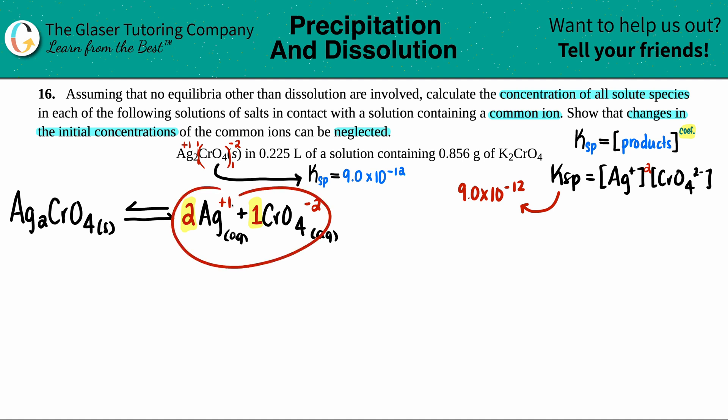This is a common ion question. I have this compound already in a solution that has K2CrO4. K2CrO4 has a group one ion, and remember our solubility rules: anytime you have a group one ion, those compounds are always aqueous and will dissolve into their two components.